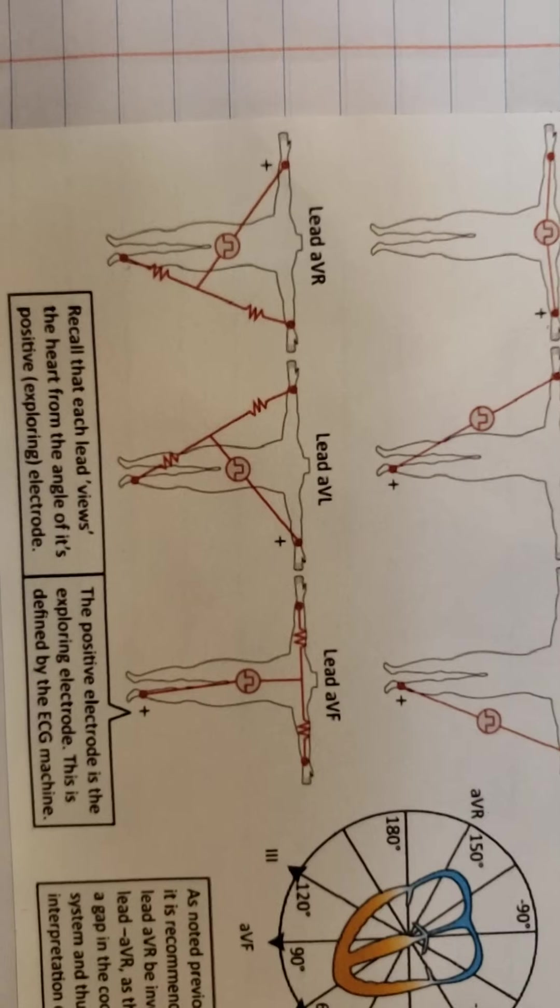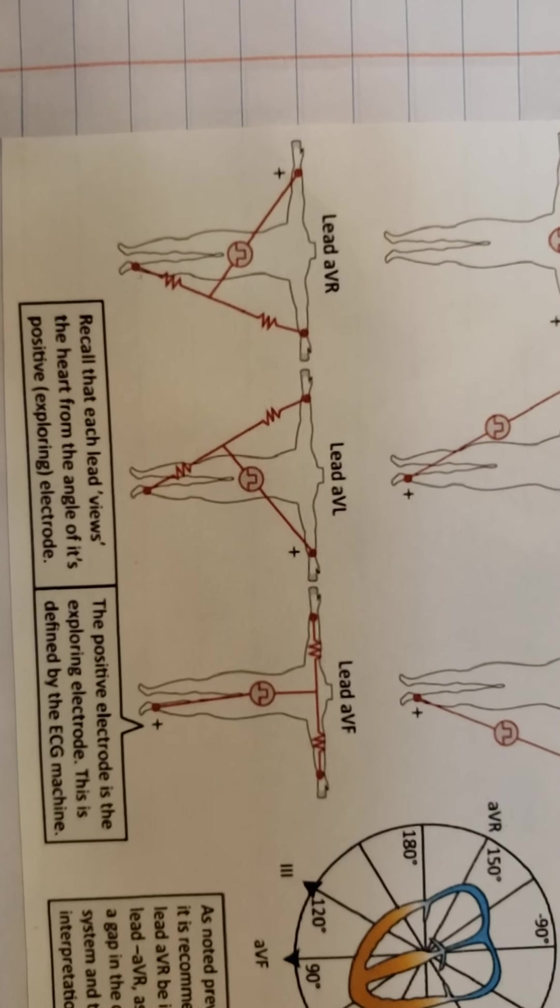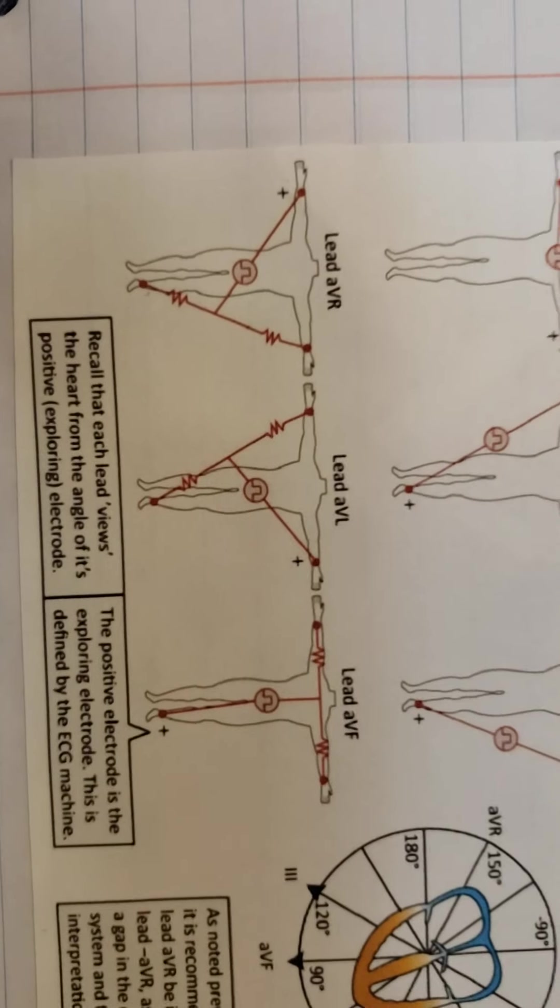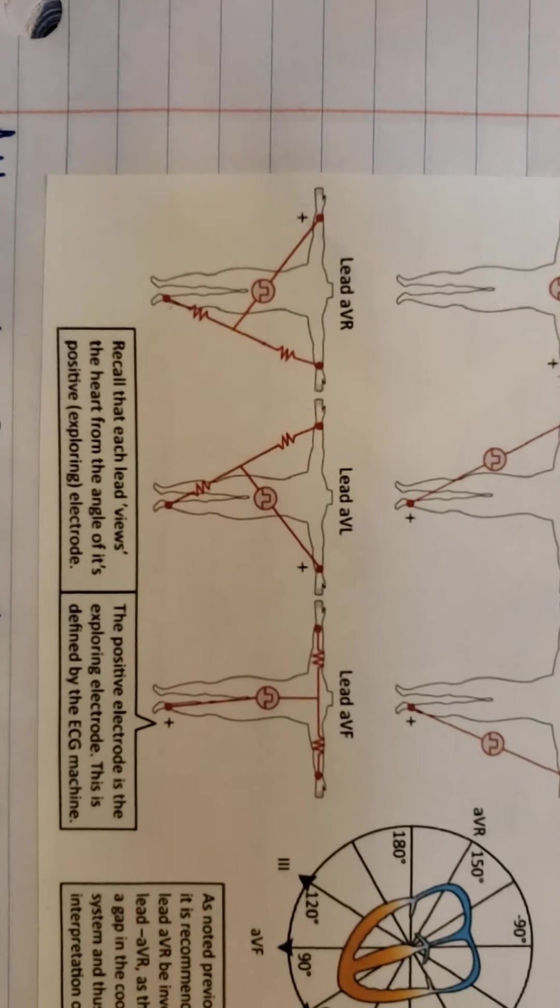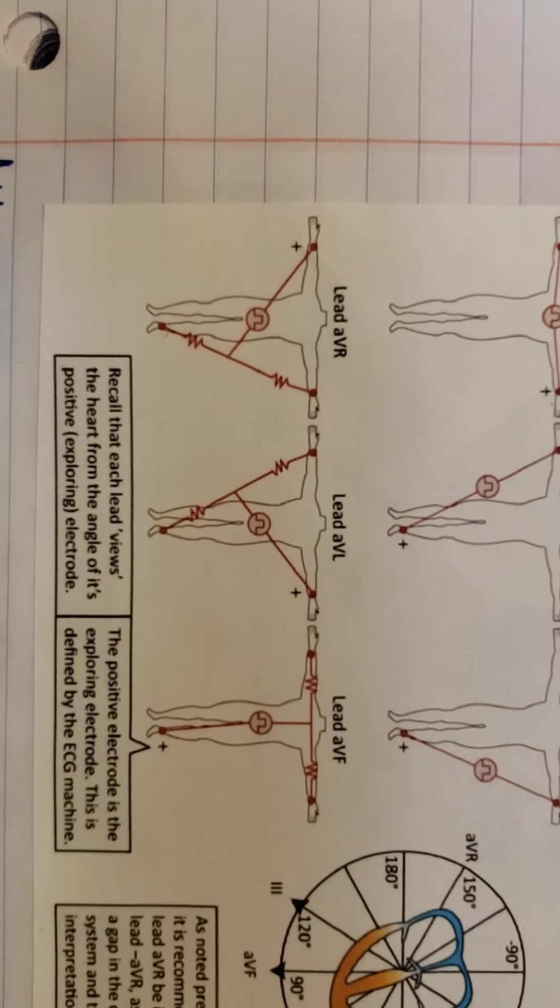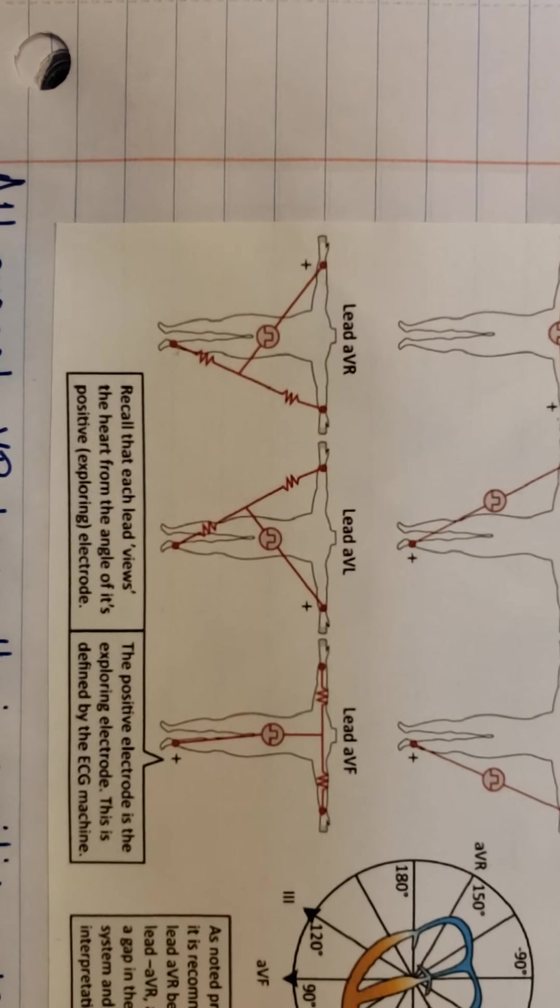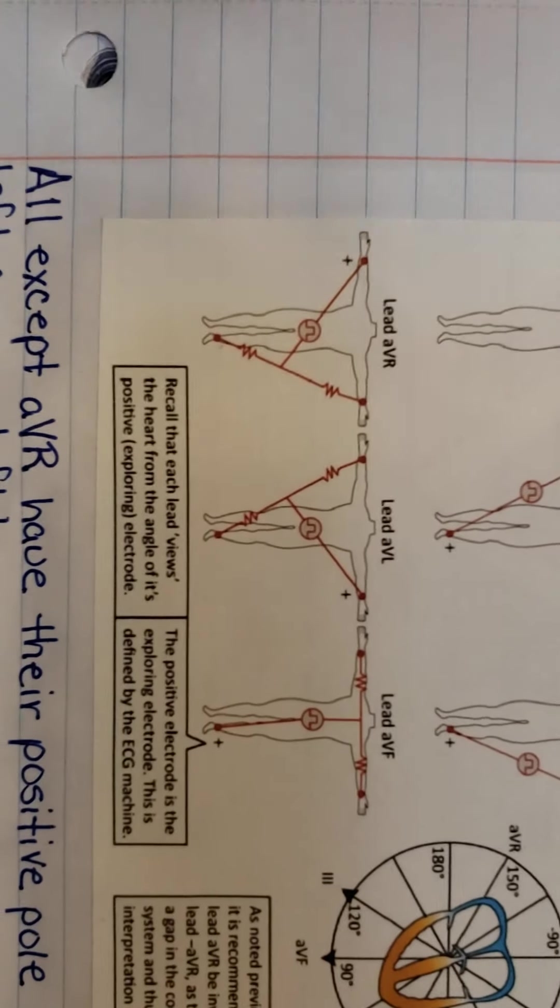Remember we said that depending on the view of where it's going, the augmented leads take the poles in between the two other leads, and it makes it the negative? Well, in AVR, we're going away from our positive lead. Therefore, we're going towards the negative. Therefore, our QRS will be negatively deflected.